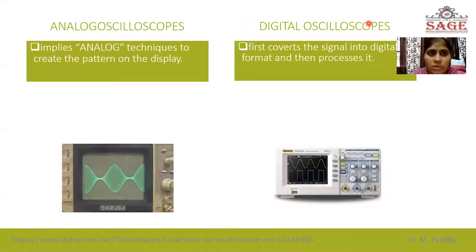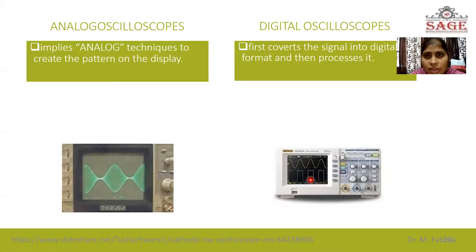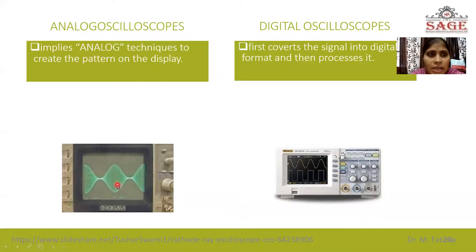Now the types of the oscilloscope: analog oscilloscope and digital oscilloscope. The analog oscilloscope uses analog techniques to create the pattern on the display — you can see here, this is the analog CRO. The digital oscilloscope first converts the signal into digital format and then processes it. This picture shows the digital oscilloscope, on which you can display a sine wave, square wave, or any type of wave. The digital oscilloscope also has memory; it stores the signal, and when the cursor moves on any point of the waveform, it gives the value in digital form. In the analog oscilloscope, we have to do the measurements manually, whereas in the digital oscilloscope the measurements are readily available on screen.